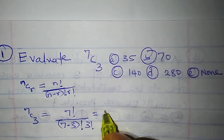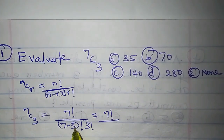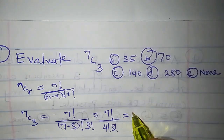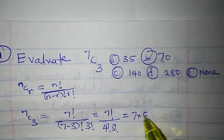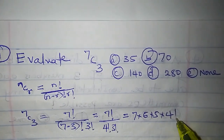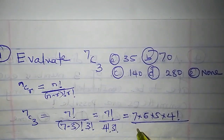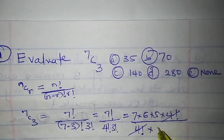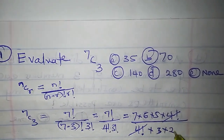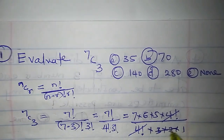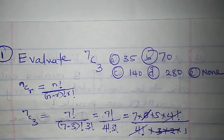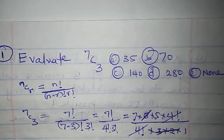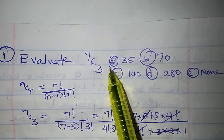This is seven factorial all over four factorial times three factorial. This is seven times six times five times four factorial — stopping at four factorial so they can cancel out — times three factorial, and three factorial is three times two times one. Three times two is six, and six cancels six. So, this is seven times five, and that's 35. So, seven combination three is 35, that's option A.